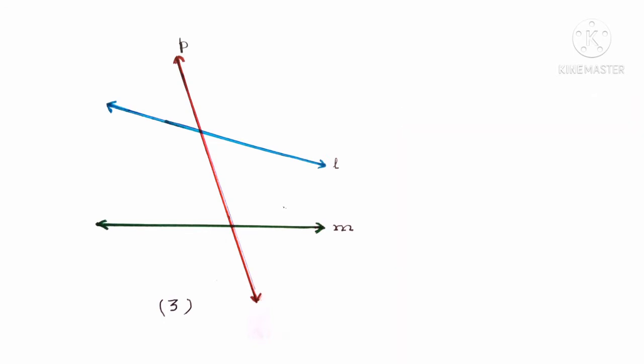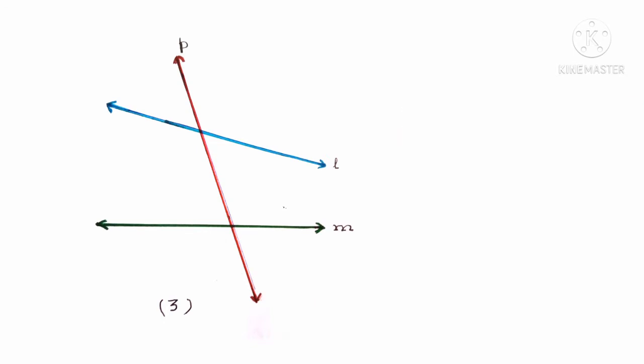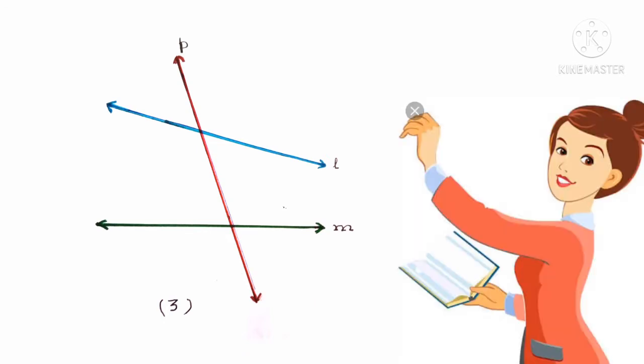In the third figure, line P intersects line L at R and line M at S. So line P is called as the transversal.